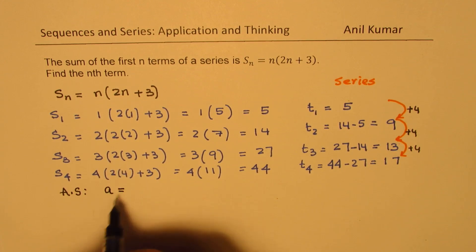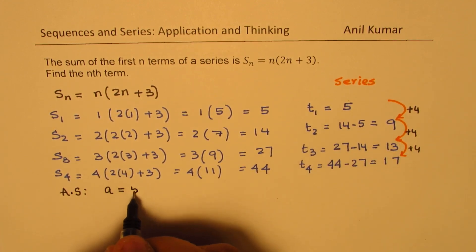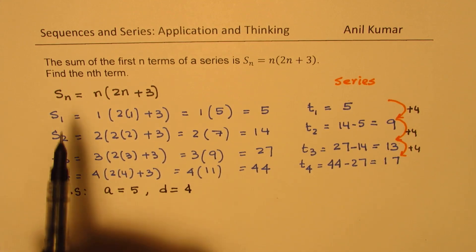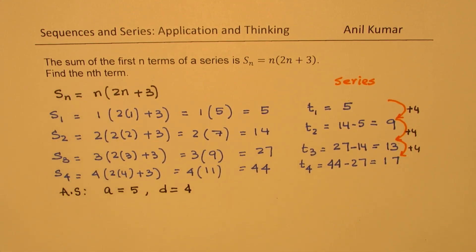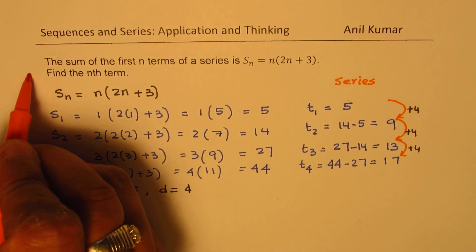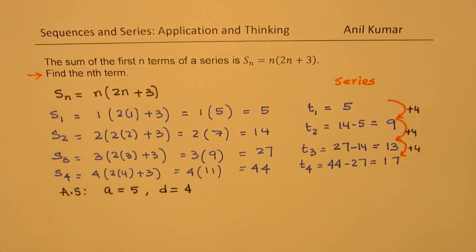Where the first term A is 5 for us, and the common difference D is 4 for us. Now we need to find the nth term. So we can use the arithmetic series formula to find nth term, which is term number 1, A, plus common differences added each time.